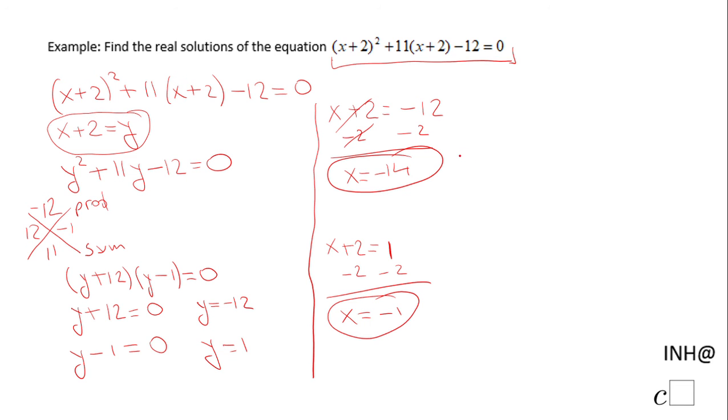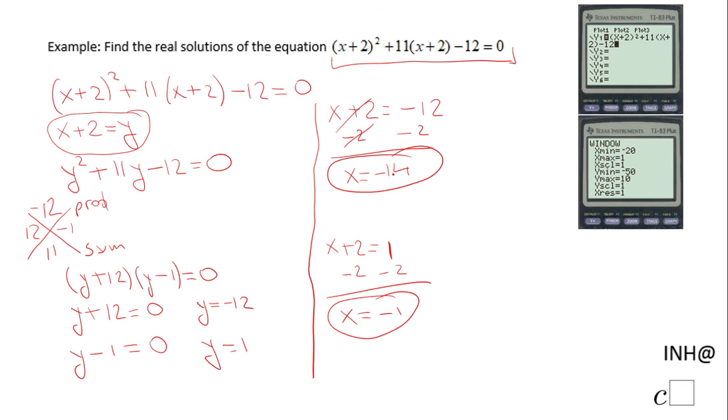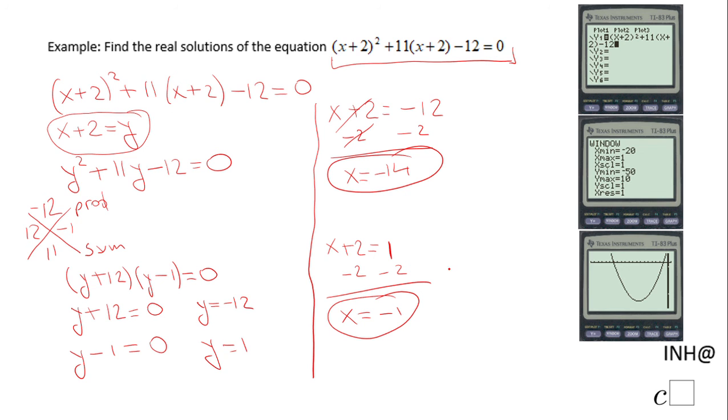You see I put the left side of the equation in Y1. I adjusted the window, you can see it here, and yes I can see these two x-intercepts right here and right here, which should be -1 and -14. And that's it. If you enjoyed this clip, don't forget to click the like button and come back on C Squared for more help. Thank you.